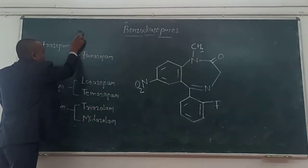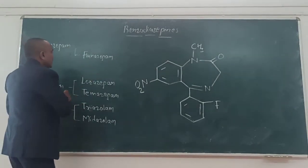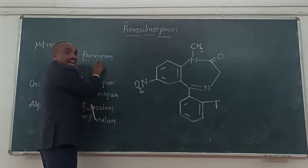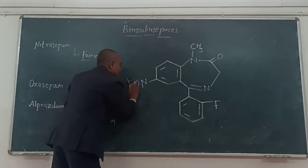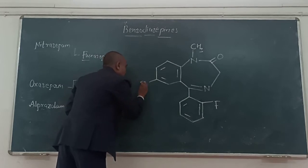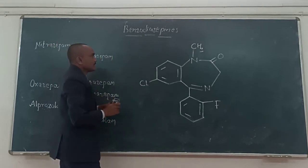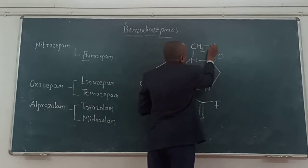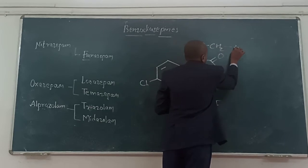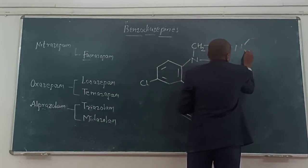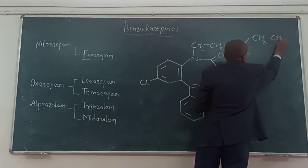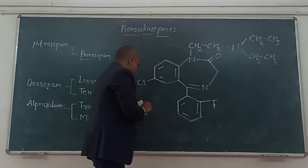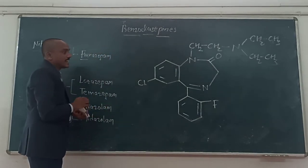Similarly, we can prepare flurazepam. It also indicates the presence of fluorine. It does not contain the nitro group; instead it contains a chlorine atom as in diazepam. One more change: one of the hydrogens is replaced with a diethyl chain substituent. And it becomes the structure for flurazepam.